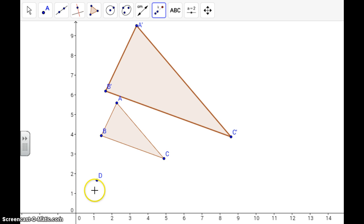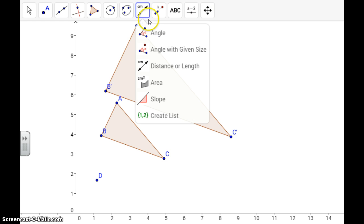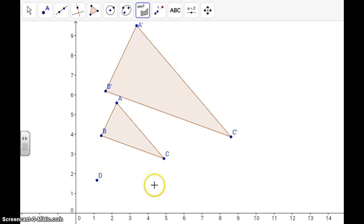So now I have my center of dilation, pre-image, and the image. So what I need now is the area and the perimeter. So what I'm going to do is go to the fifth one from the right, drop it down, and I see area there. So I can click that button, and then I'm going to click my pre-image. So notice that my area of my pre-image will just pop up as a little rectangle there.